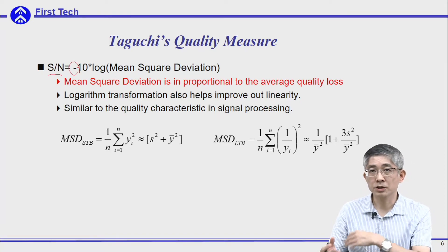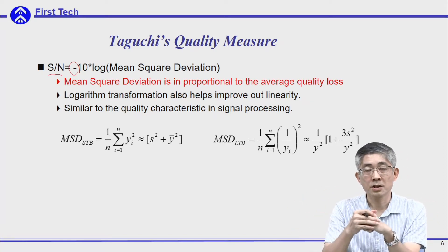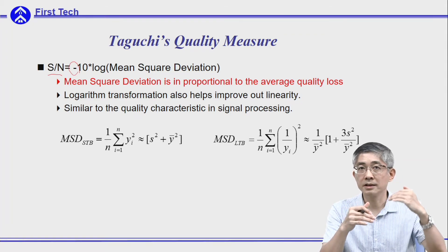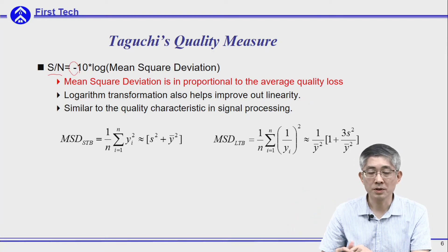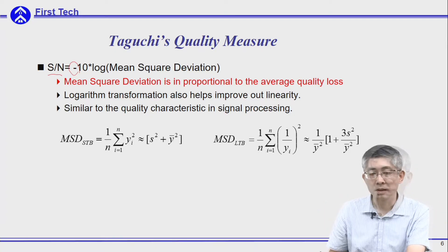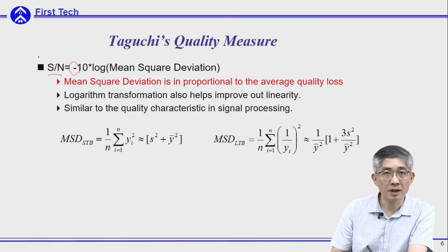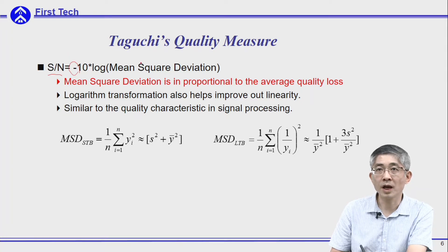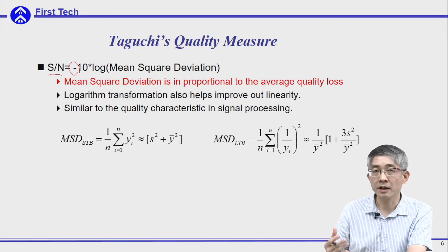The minus sign is used to convert the direction of loss and SN ratio. In the conventional SN ratio, we would like the SN ratio to be as large as possible, but we want the loss to be as small as possible. By using this negative sign, we make the direction consistent. With this mathematical transformation, a design with a larger SN ratio means the design will have a smaller mean squared deviation. The logarithm transformation also helps to improve non-linearity and makes the system easier to model.